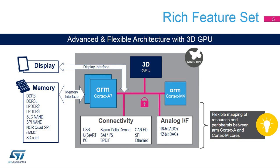The Cortex-A7 core provides access to open-source operating systems such as Linux and Android, while the Cortex-M4 core leverages the STM32 MCU ecosystem. The STM32MP1 comes with many benefits, including a rich development ecosystem, mainlined open-source Linux distribution with Android support available via partners, and STM32Cube firmware and embedded software libraries for the Cortex-M4 core.